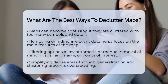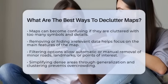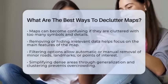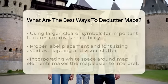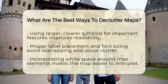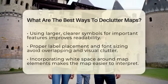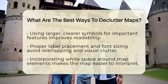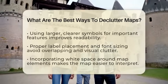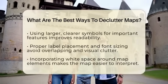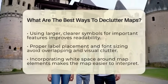Next, generalization and aggregation help simplify dense areas. Instead of showing every single building or tree, group nearby points into clusters or use larger symbols. This is especially useful in urban areas where many features overlap. It keeps the map from looking overcrowded and helps viewers see overall patterns more easily.